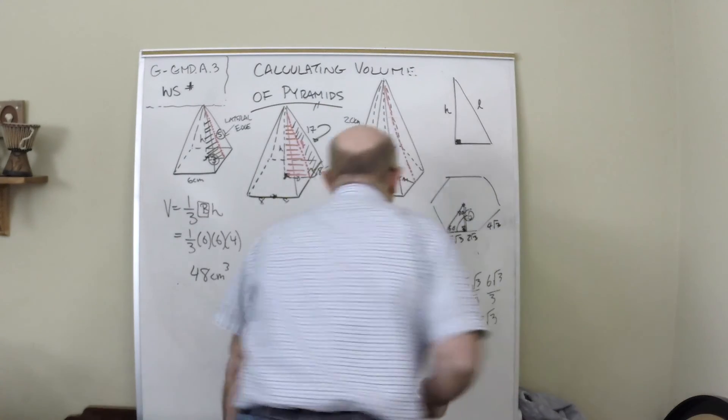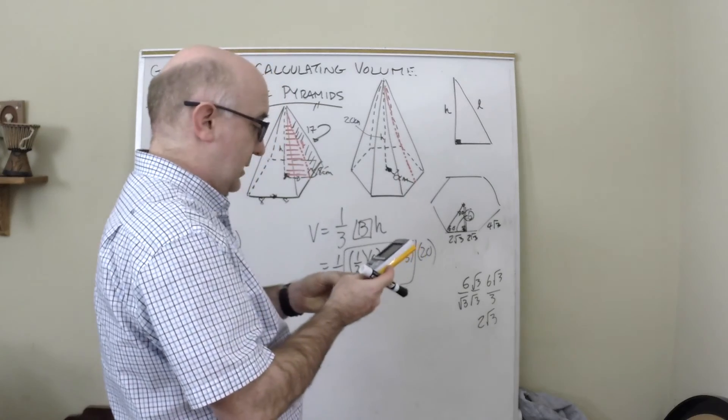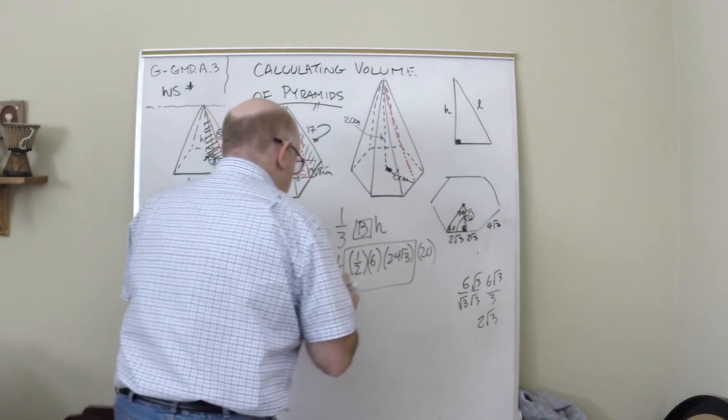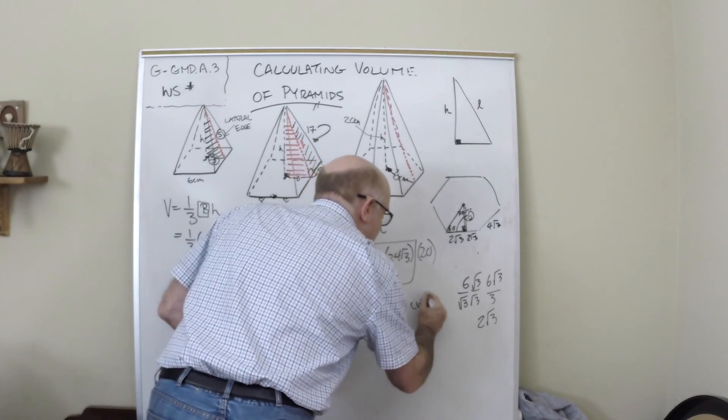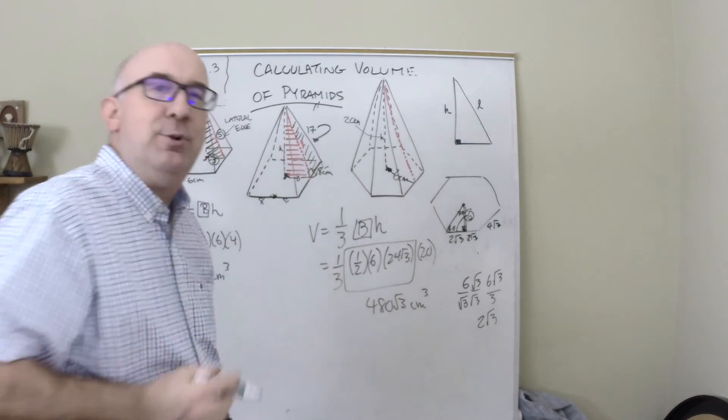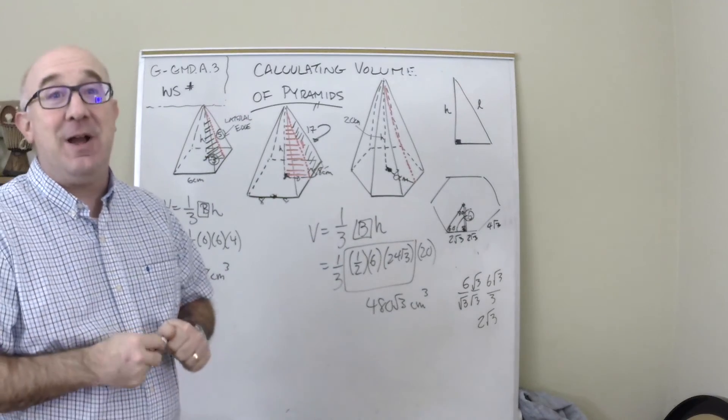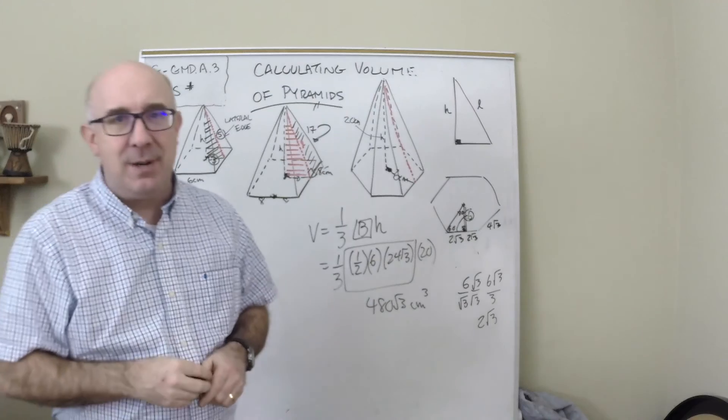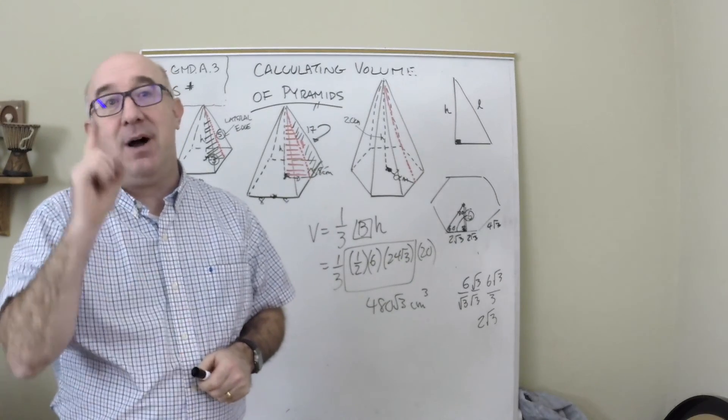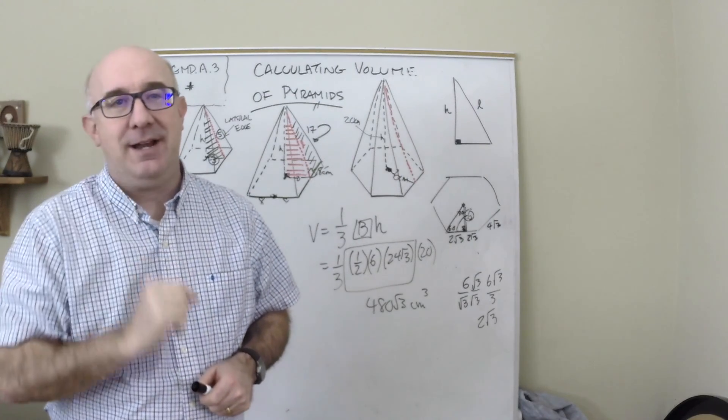The height is 20. Let's get the number here. It'll be 480 root 3 centimeters cubed. Well, I ended up doing a couple of trickies, but it's okay to have somebody do the trickies to give you an idea how to do them. Good luck with some of these problems. They're fun. Keep in mind: one-third the base times the height.